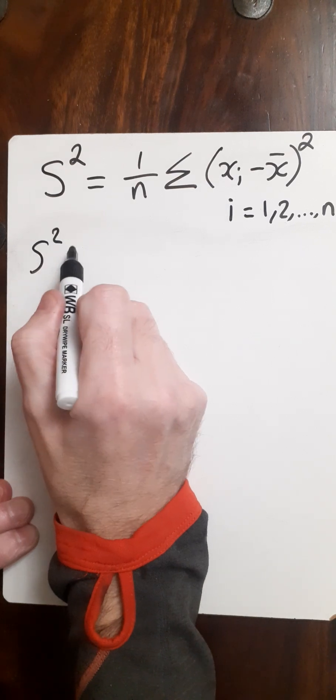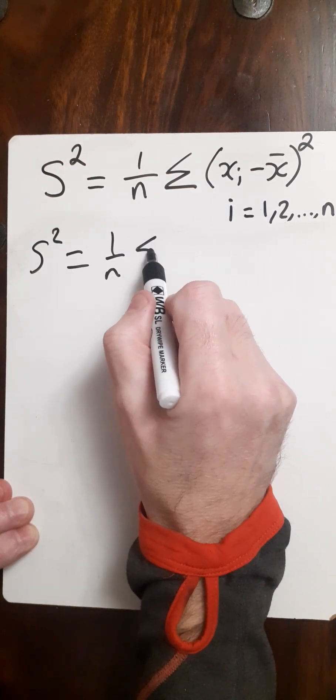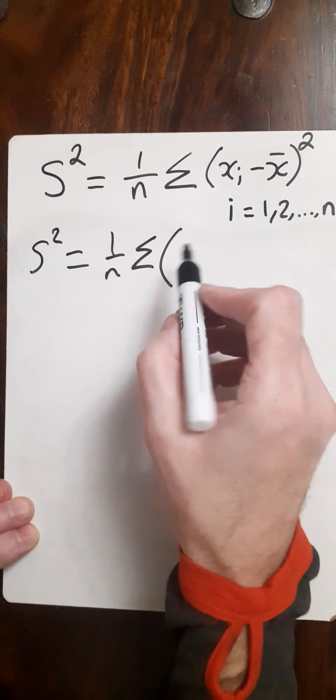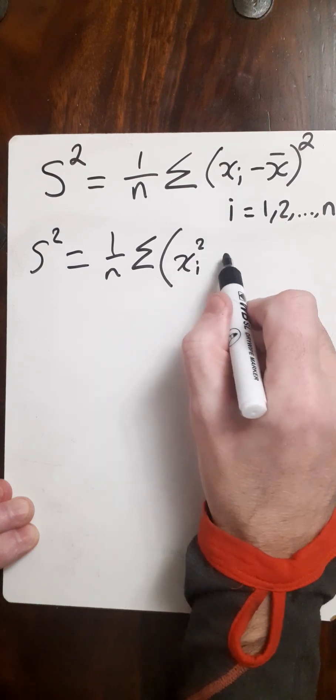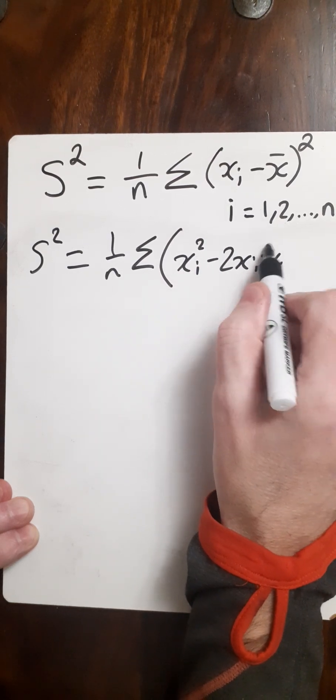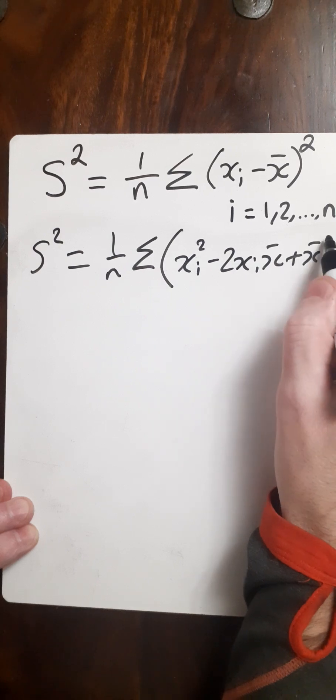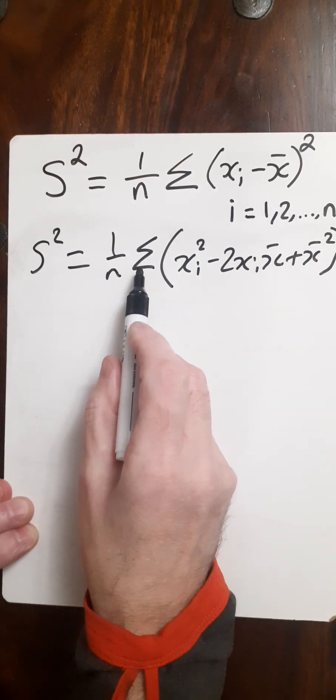Now my variance equals 1 over n, sigma notation. I'm going to square this term here. So xi squared minus 2xi times x bar plus x bar squared. Now I'm going to bring my sigma over n inside each one of these terms.